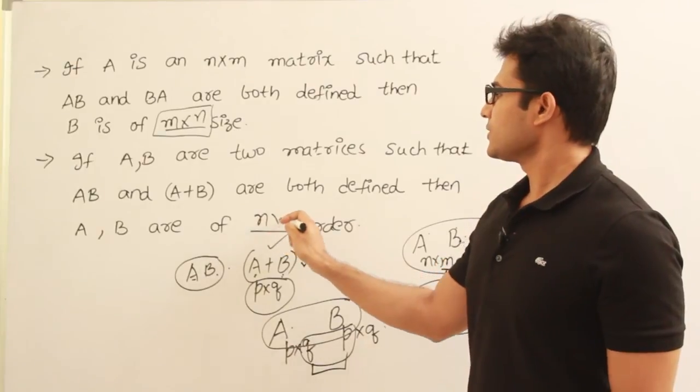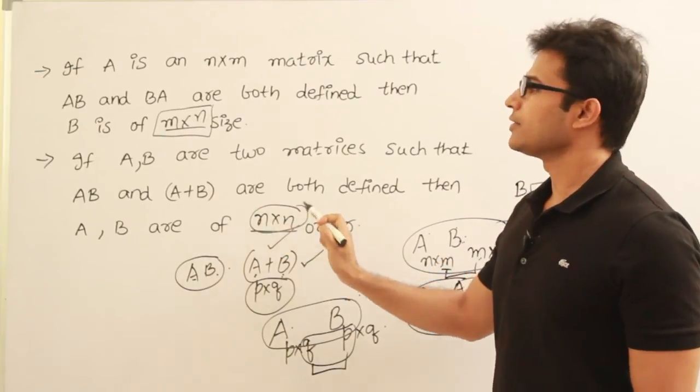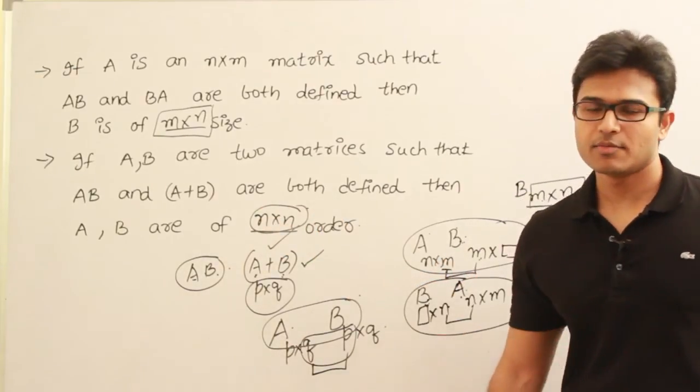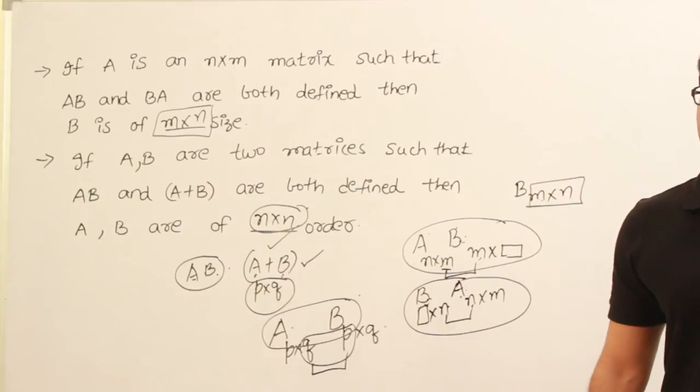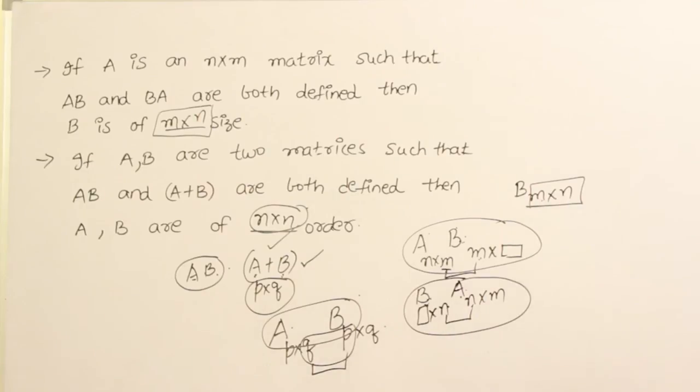Therefore from these two facts we can say that A and B must be square matrices of the same size — square matrices of the same order n.